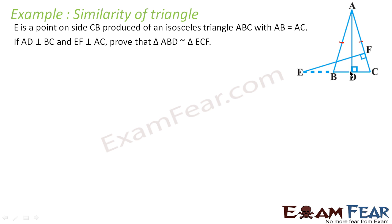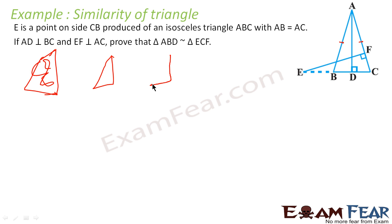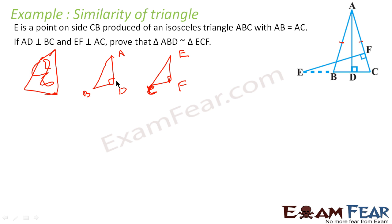We see triangle ABD where angle D is 90 degrees. Similarly, for triangle EFC — this is E, this is F, this is C — angle F has to be 90 degrees, and indeed F is 90. Now to prove both triangles are similar, first thing is angle D is equal to angle F, both are 90 degrees.